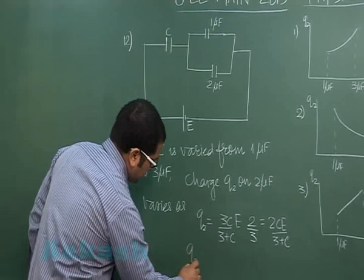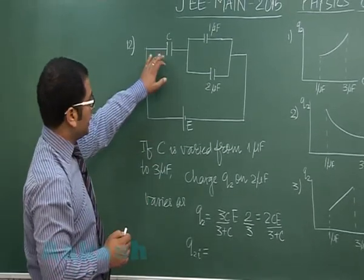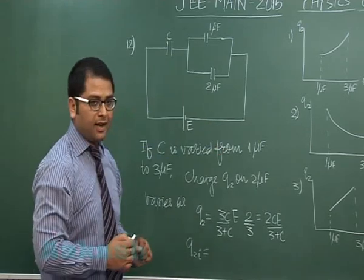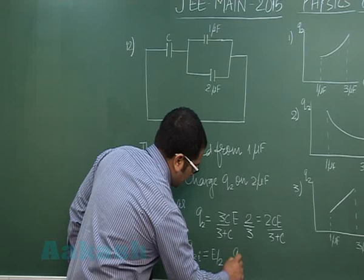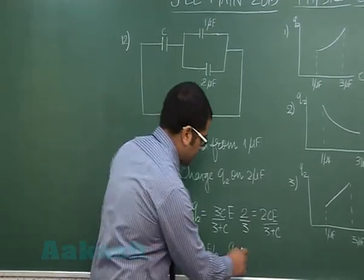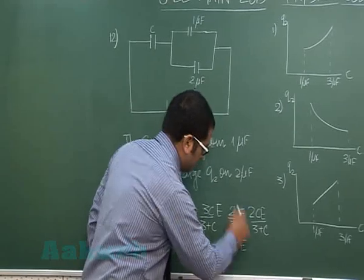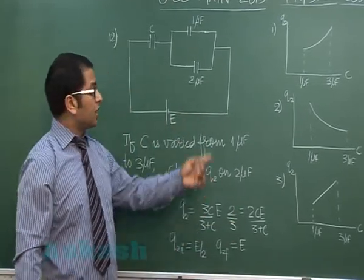Now let me see the initial and final value of charge. Initial means when C is 1 microfarad, it's very simple, that comes out to be E/2. And final, when C is 3 microfarad, so 6/6, that would be 1 and that will be E. So you got the initial and final value of charge across this. It is increasing.